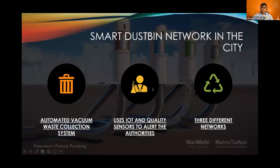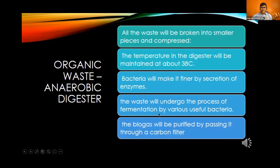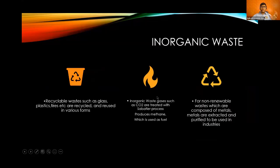A smart dustbin network will be used underground the city, using pneumatic suction tubes to carry waste and avoid foul odor, with three separate networks for recyclable, non-recyclable, and hazardous waste. Organic waste will be handled by anaerobic digestion, a process which creates biogas. Inorganic recyclable waste will be recycled. Other inorganic waste will be subjected to the Sabatier process, which uses hydrogen to create methane as fuel. For non-renewable waste, metals will be extracted and reused, creating an effective circular economy.